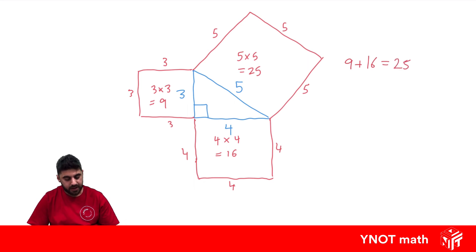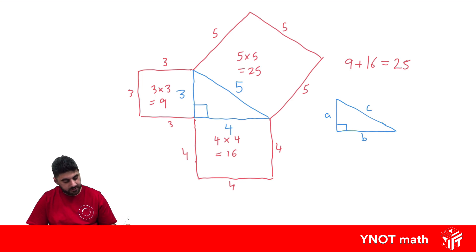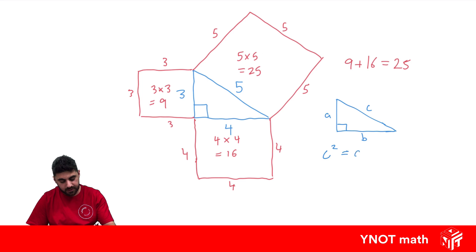And this is actually Pythagoras' theorem. Pythagoras' theorem states that — let's draw another right-angled triangle and generalise it — where if this side was a, b, and c, then this side squared equals this side squared plus this side squared. That's what Pythagoras' theorem is. So we could write this as c squared equals a squared plus b squared.